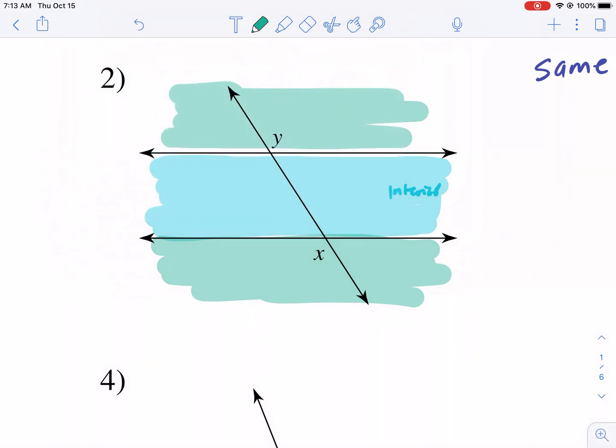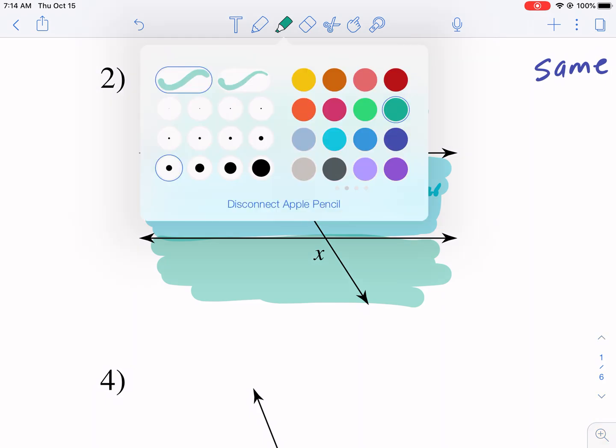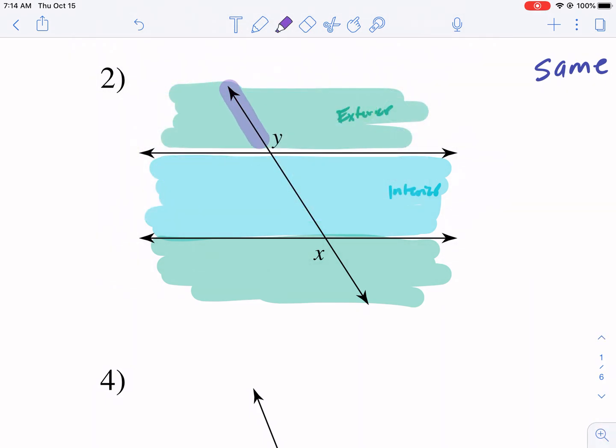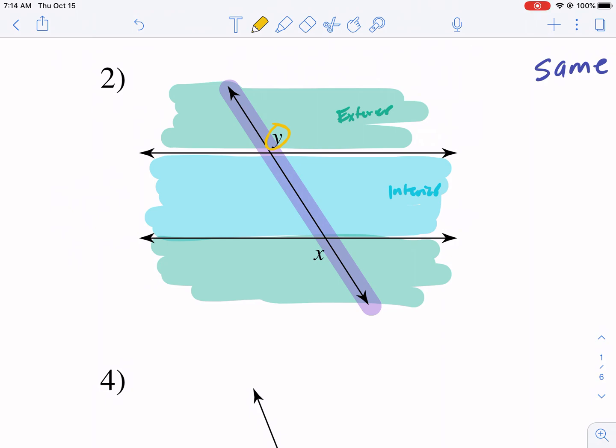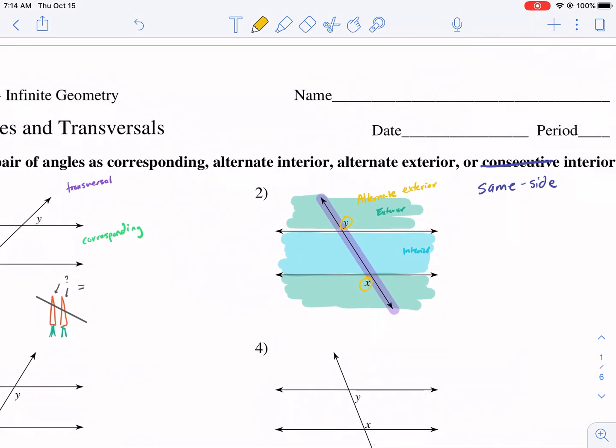And so outside of the two parallel lines this would be known as the exterior space, the outside or exterior. With that information and understanding where the transversal is and how these two angles relate, we can figure this out. The Y is on one side of the transversal, it's on the right side of the purple line, and the X is on the other side. So they are on alternate sides and they're in the exterior. So they are alternate exterior angles.